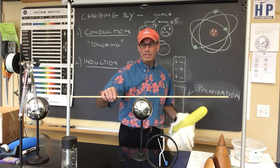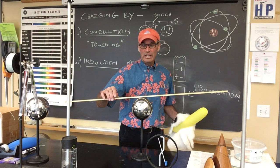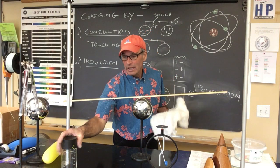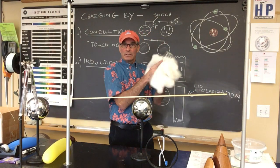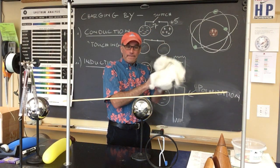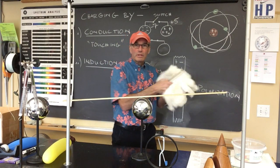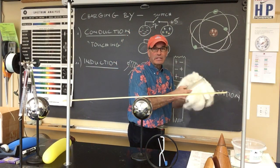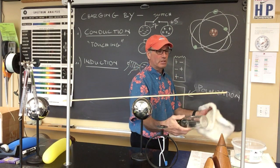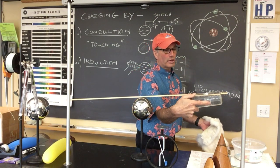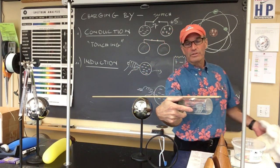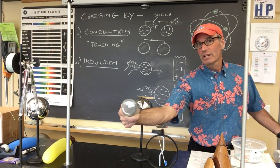Now let's charge this fleeker through the rubbing process. Rubbing this fleeker with the rabbit's fur and placing it in the same position as I did the balloon. Look at that. The fleeker's attracting the meter stick, causing it to rotate.